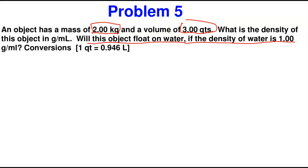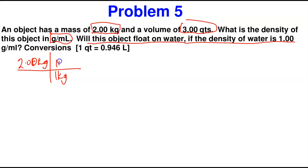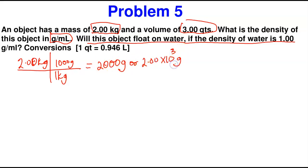To convert 2.00 kg to grams: 2.00 kg × (1000 g / 1 kg) = 2000 g, or 2.00 × 10³ g. Next, convert 3.00 quarts to liters using the given conversion, then to milliliters. We know 1 quart = 0.946 liters, so: 3.00 qt × (0.946 L / 1 qt) = 2.838 L. Then convert liters to milliliters: 2.838 L × (1000 mL / 1 L) = 2838 mL. You don't need to memorize metric-to-English conversions — they will always be given to you.